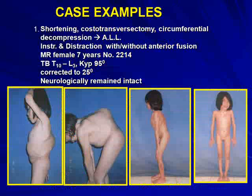As an example, a 6-year-old girl with TB at T10 to L3 with kyphosis of 95 degrees. After surgery, it was corrected to 25 degrees, with neurological function still intact.